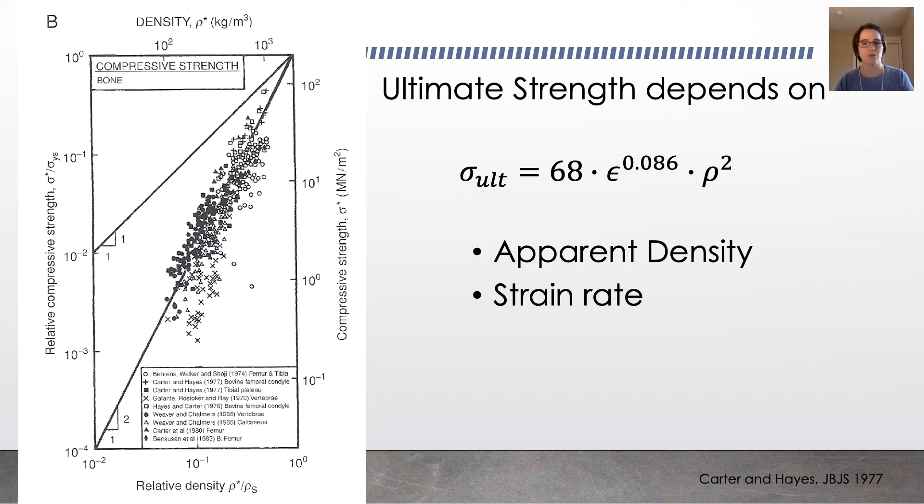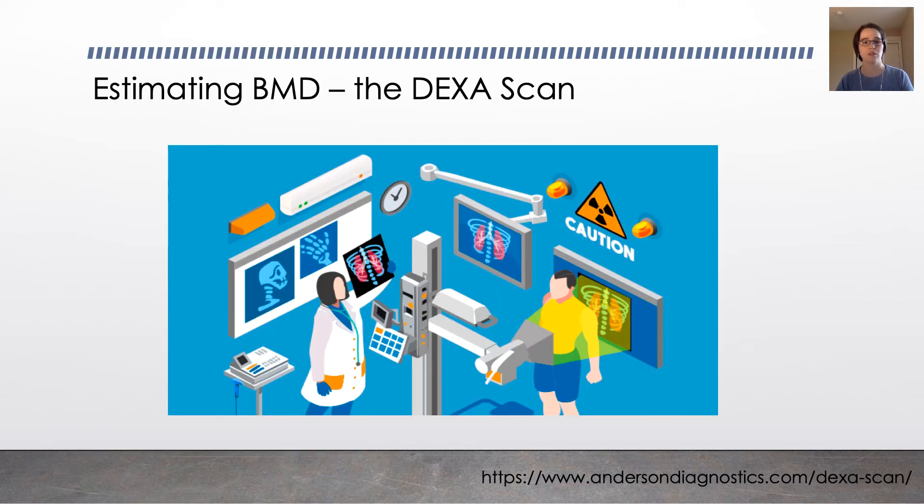So given that this is such an important characterization property, the relative density has such a strong relationship between both the modulus and the ultimate strength of the bone, it would be really useful to be able to estimate this in living people so that you can make an estimate of their bone health. Because that tells you a lot about their risk of injury due to certain activities. So that's where something called the DEXA scan comes in. The DEXA scan is the gold standard clinical tool for estimating bone mineral density, or BMD.